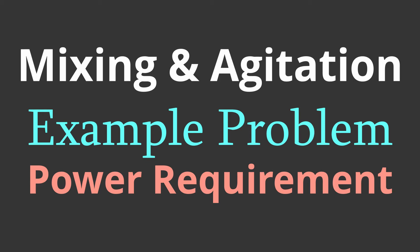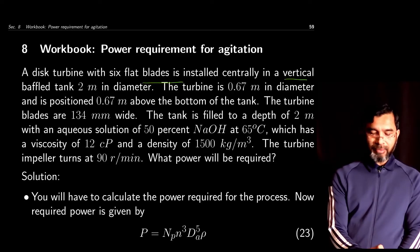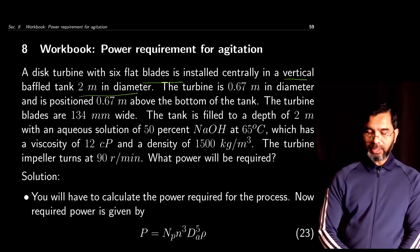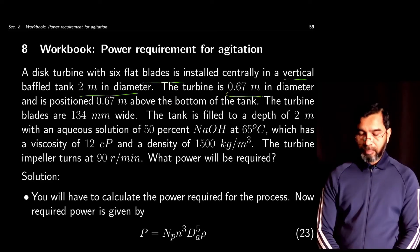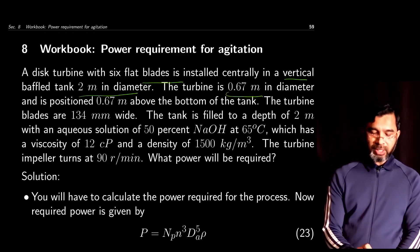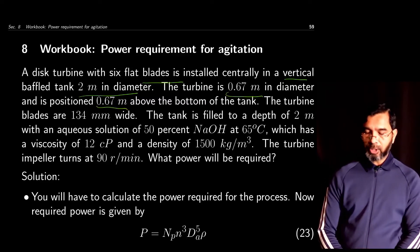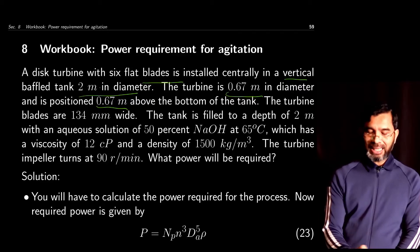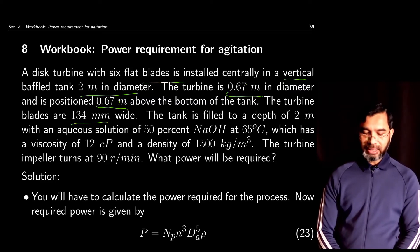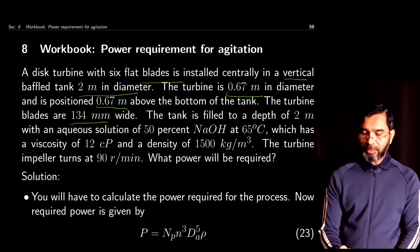Here is one example. A turbine with six flat blades is installed centrally in a vertical baffled tank 2 meters in diameter. The turbine is 0.6 meters in diameter and is positioned 0.6 meters above the bottom of the tank. Remember all the dimensions: DT, DA, and E. The turbine blades are 130 millimeters wide (W). The tank is filled to a depth of 2 meters.